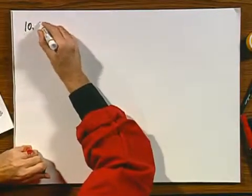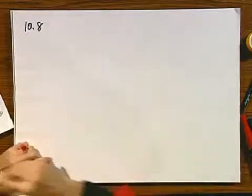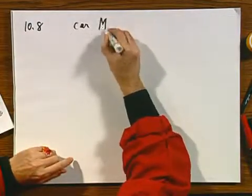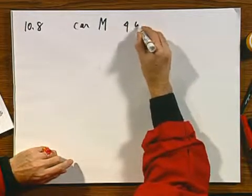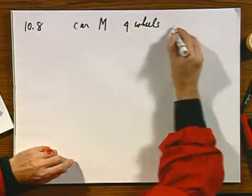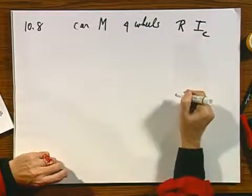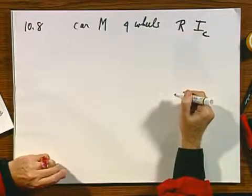Alright, so let's now go to our next problem, and our next problem is ten-eight. I have a car, it has mass M, it has four wheels, each wheel has radius R and it has moment of inertia I, rotating about the center axis of symmetry.